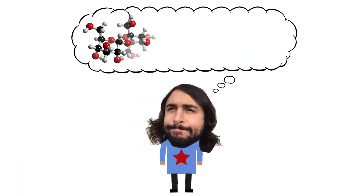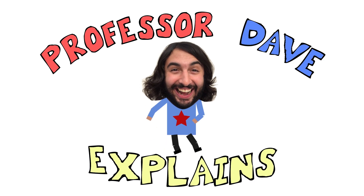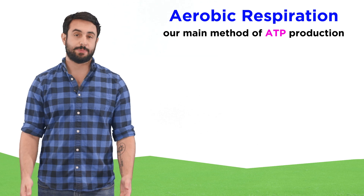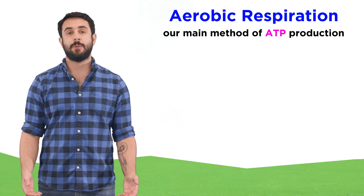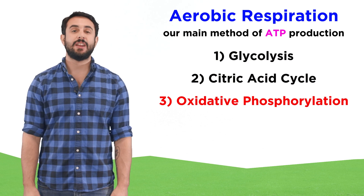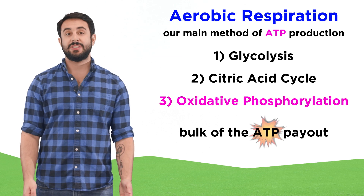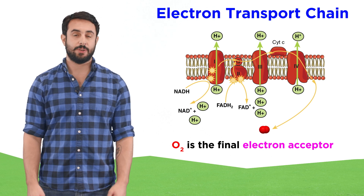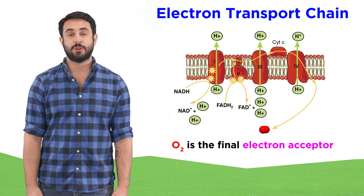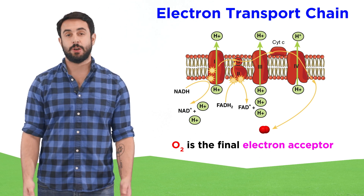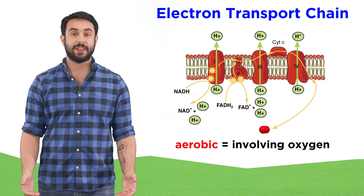Professor Dave here, let's get anaerobic. In the biochemistry series, we looked at aerobic respiration. This is the process by which the cells in our body generate ATP through glycolysis, the citric acid cycle, and oxidative phosphorylation. This third step is the one that produces the bulk of the ATP payout, and it relies on the presence of molecular oxygen, because oxygen is the final electron acceptor in the electron transport chain, so without oxygen this process cannot occur — hence the term aerobic, which means involving oxygen.